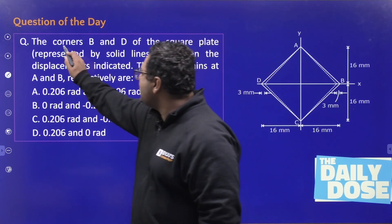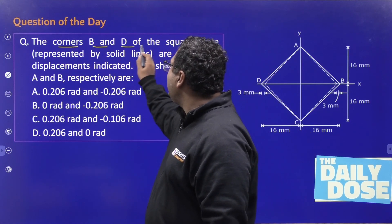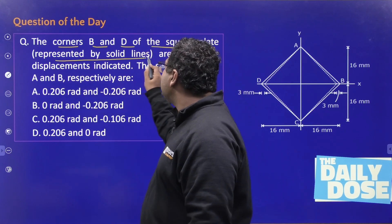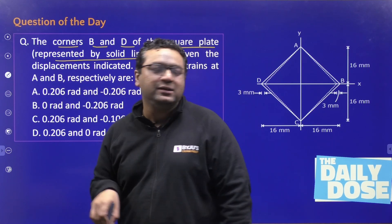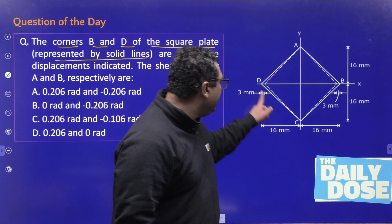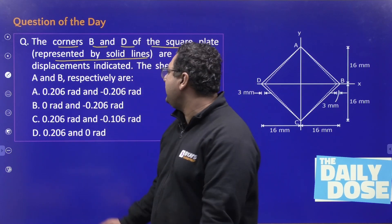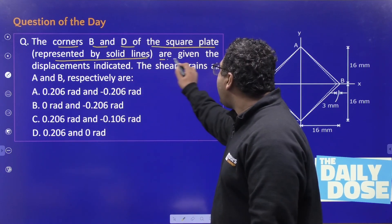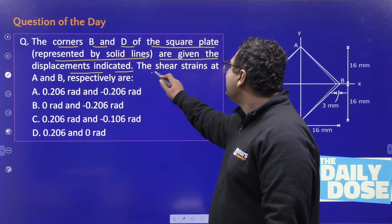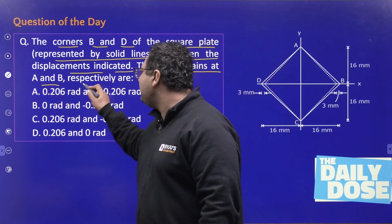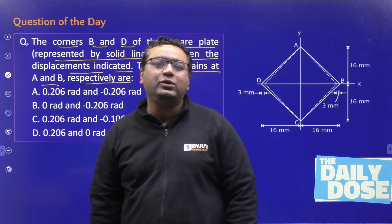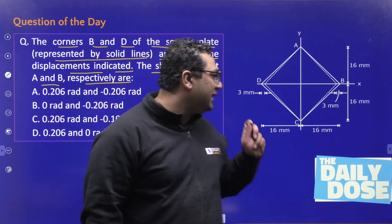The question says: the corners B and D of the square plate represented by the solid lines — you can see there is a square A, B, C, D represented by solid lines — are given the displacement indicated. Find the shear strain at A and B respectively.